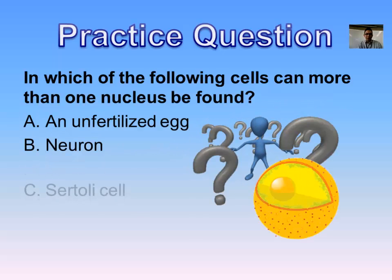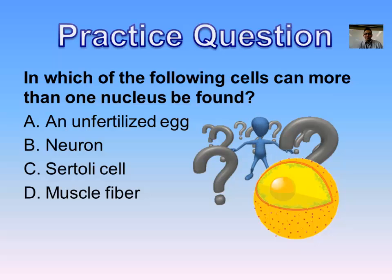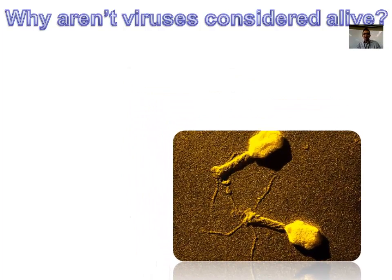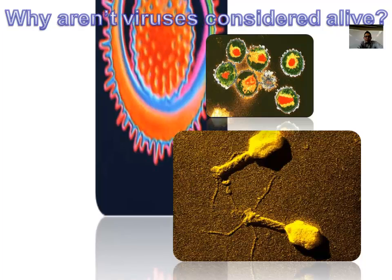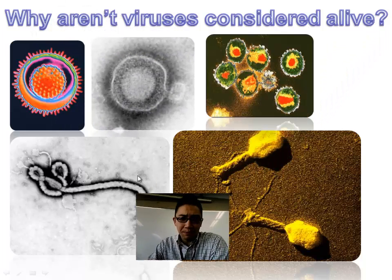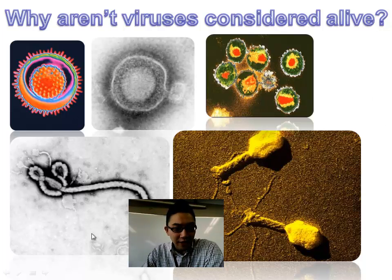Here's a quick practice question — pause the video and try to answer it. Muscle fiber is the exception we just discussed. Viruses are not considered alive primarily because, based on the cell theory, things need to be made up of cells to be considered alive. A virus is not made up of cells — it's simply a little bit of DNA or RNA, some nucleic acid packaged in protein. There's no mitochondria, no ribosomes, no cytoplasm, and none of the complex metabolic reactions happening. Viruses can only survive by being inside another cell and using that cell's machinery to replicate.